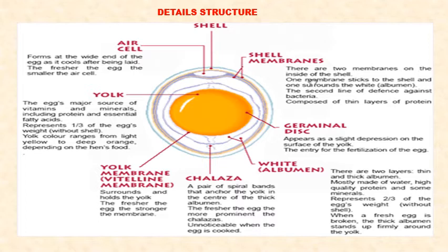Further inside we see the yolk, which has on the outside a vitelline membrane. At the top there is a spot-like structure called the germinal disc, which has an important role in reproduction. Further, the actual yolk is yellow in color and contains most of the nutrients including fat, protein, cholesterol, etc.